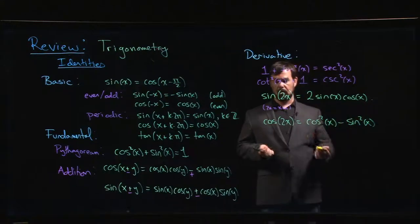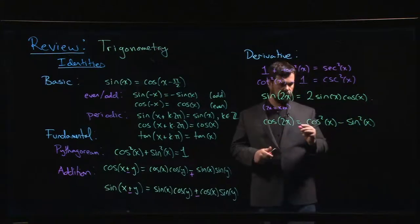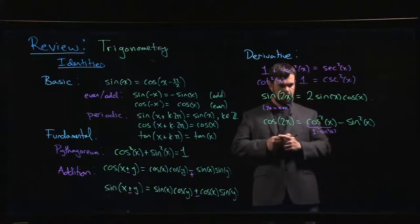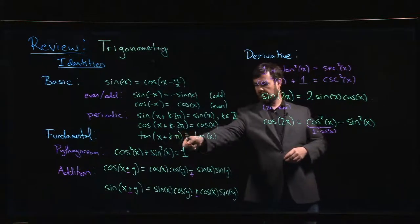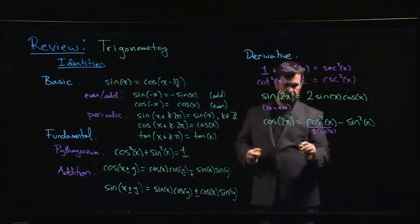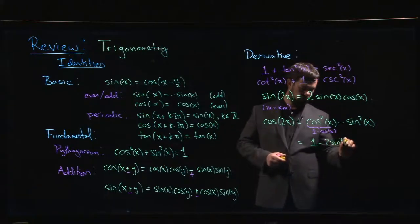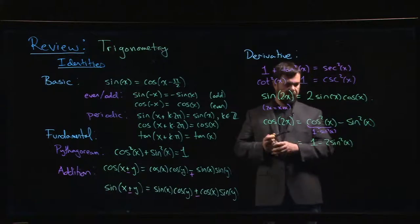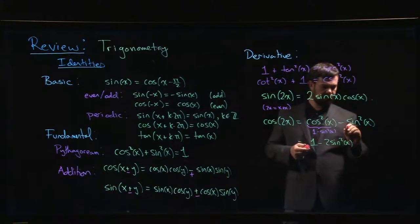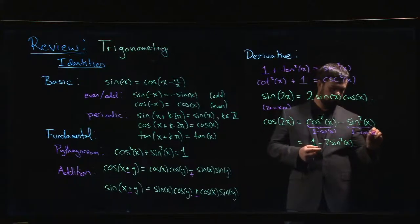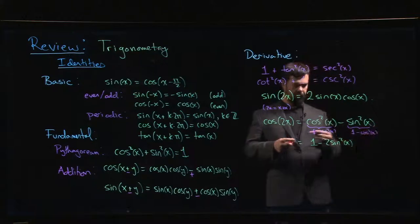But there are a number of different ways that you can sometimes write this identity. So if you write this cos squared as 1 minus sine squared, if you plug that in, solving for cos squared there, I get 1 minus sine squared. If I substitute that in, another way to write cos 2x is 1 minus 2 sine squared x. If, instead, I leave the cos alone and I say that sine squared is 1 minus cos squared, and I remember to push the minus sign through the brackets,